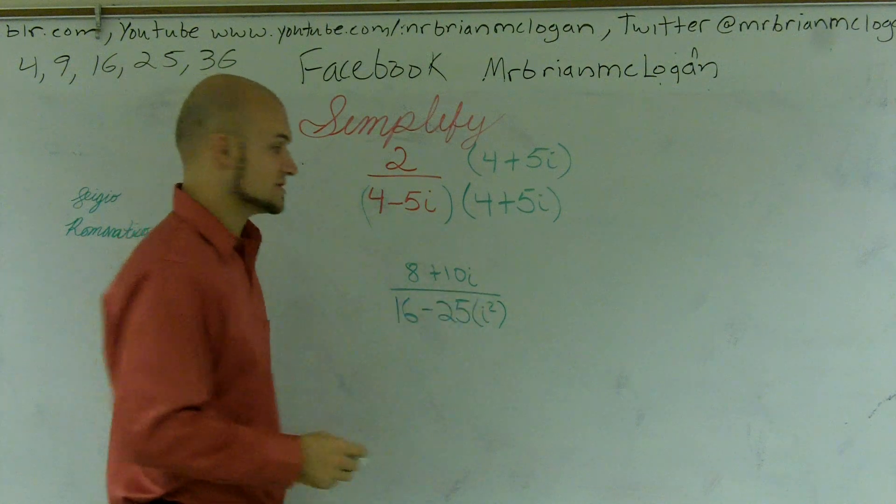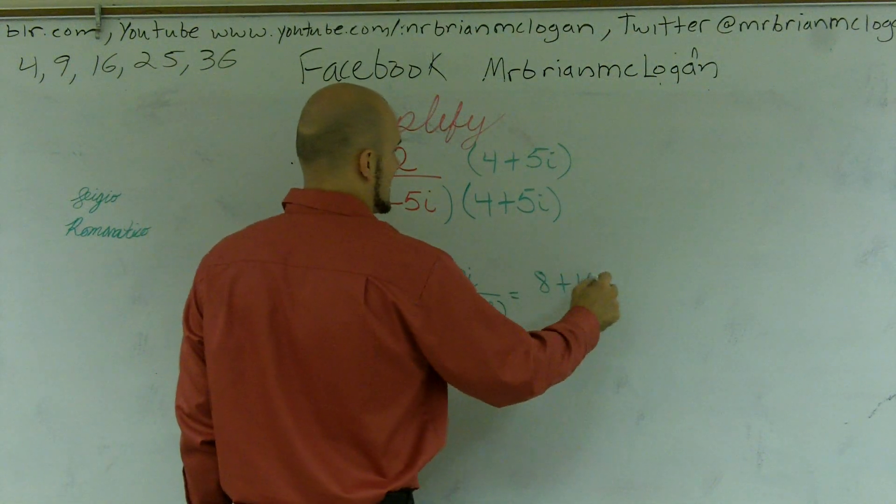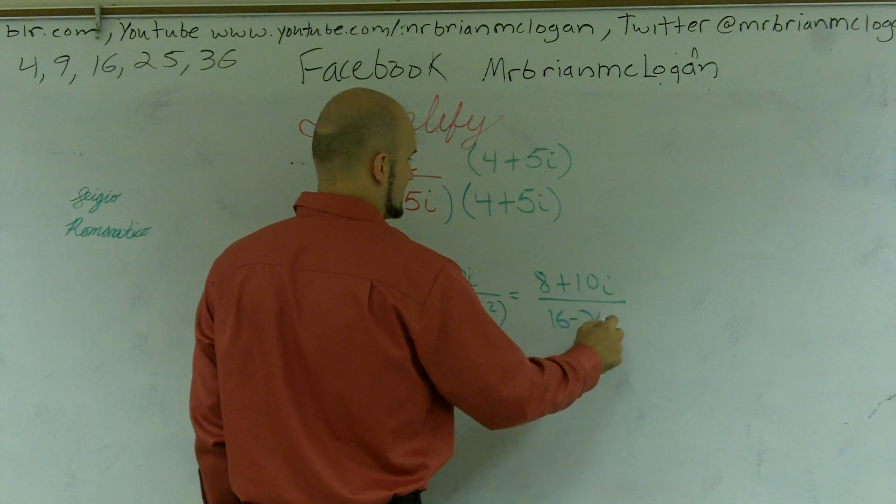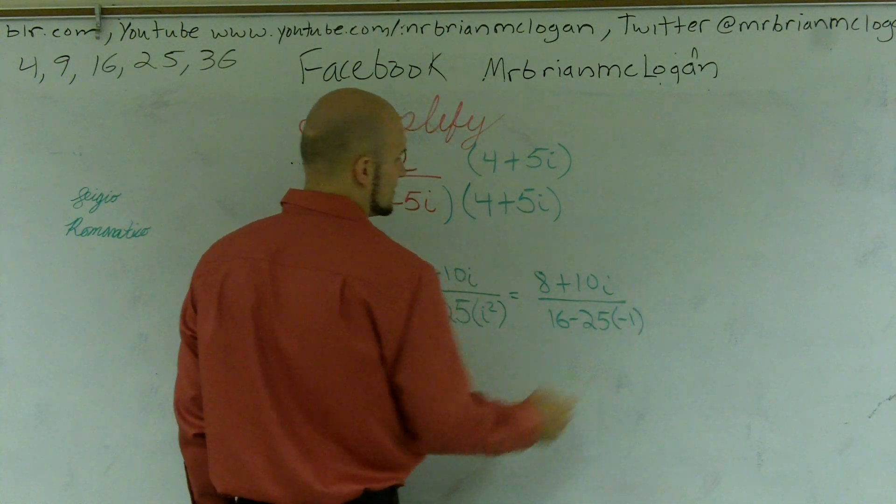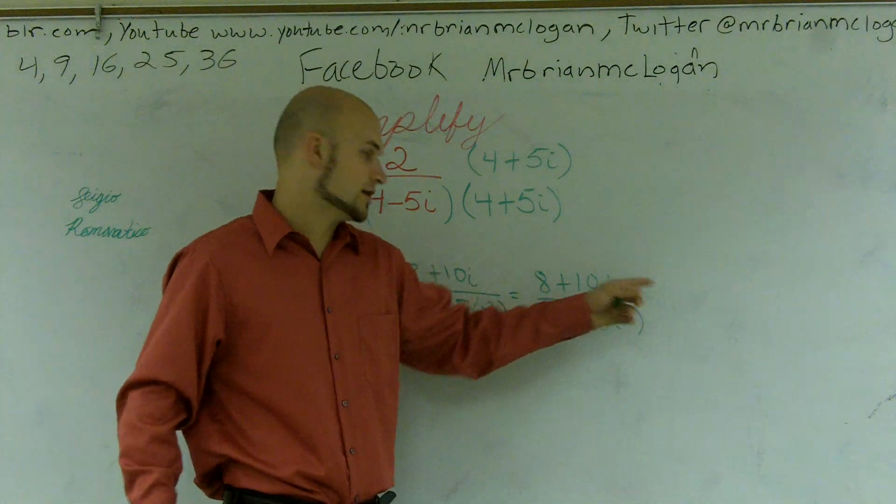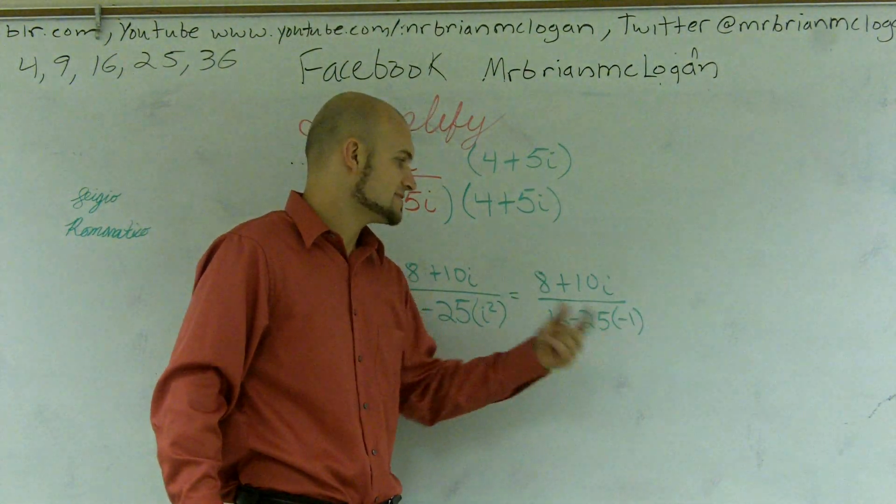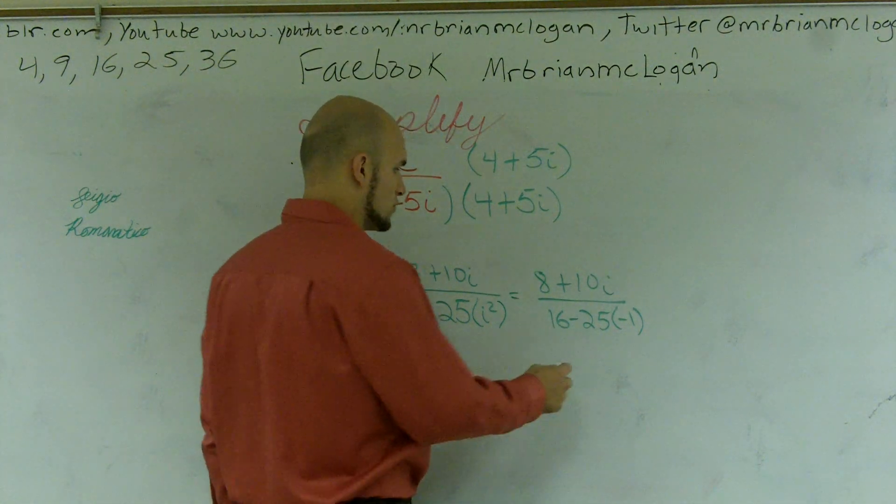i squared equals negative 1. So I get 8 plus 10i all over 16 minus 25 times negative 1. Well, negative 25 times negative 1 is positive 25. Positive 25 plus 16 gives me 41.